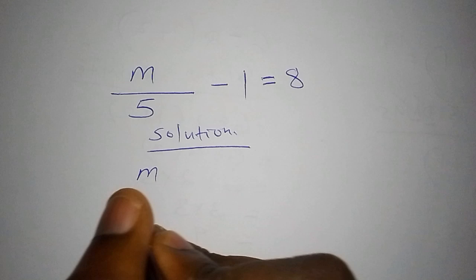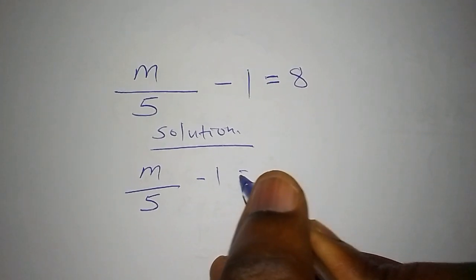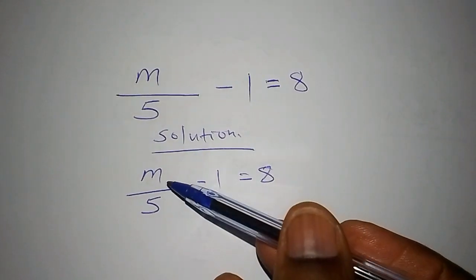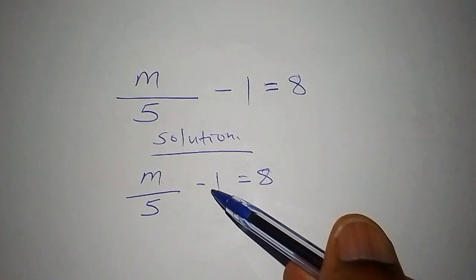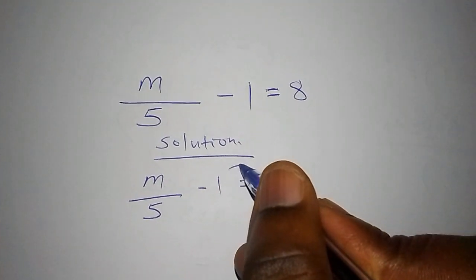We shall have m over 5 minus 1 equals 8. The first thing that you're going to do, this m is unknown but this 1 is known, so we're going to bring minus 1 to the other side.